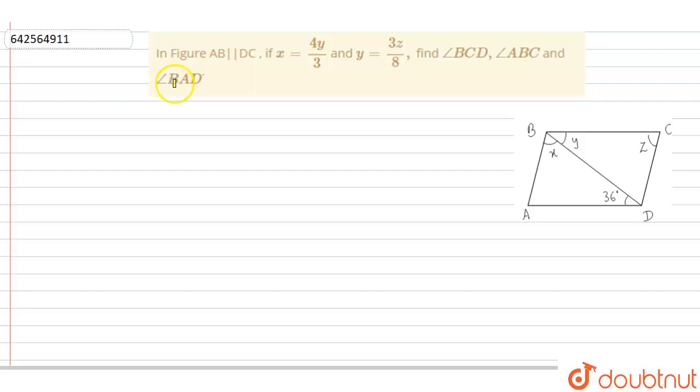Hello everyone, let us look at the following question. In the given question, in figure AB parallel to DC, if x is equal to 4y upon 3 and y is equal to 3z upon 8, find angle BCD, angle ABC, and angle BAD.